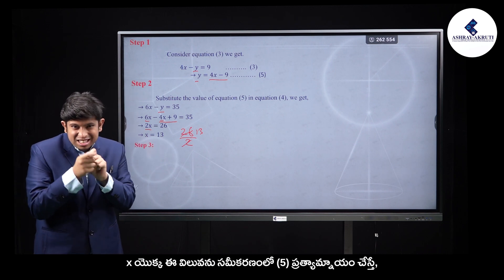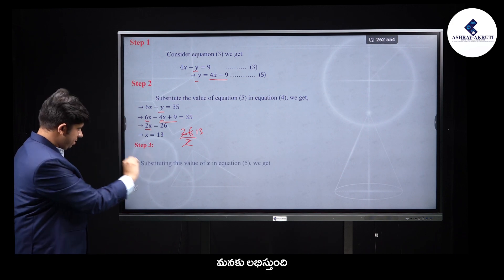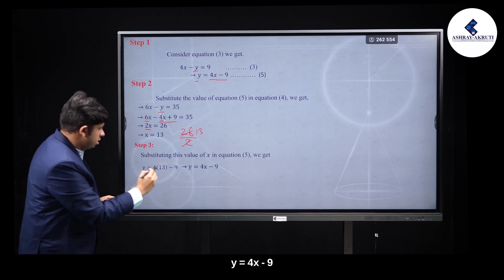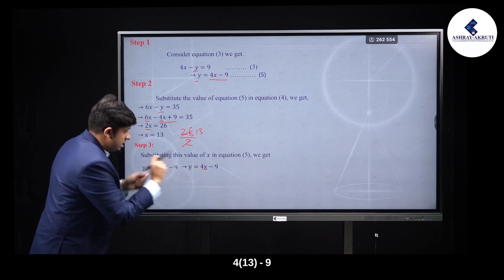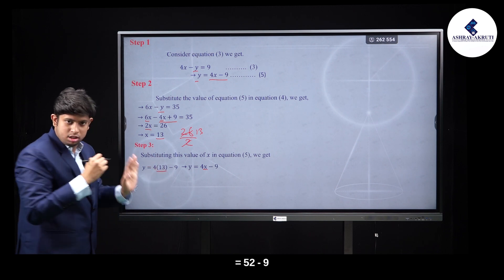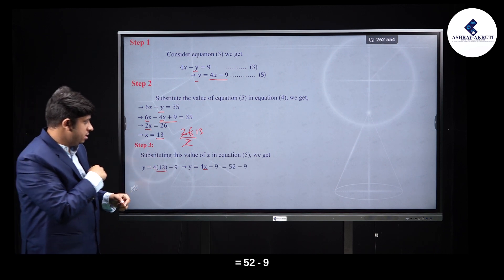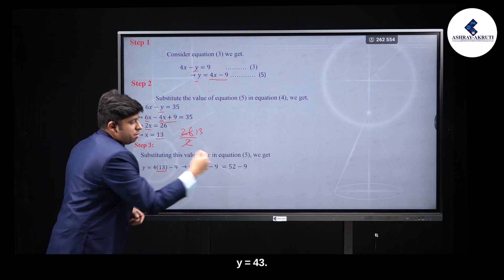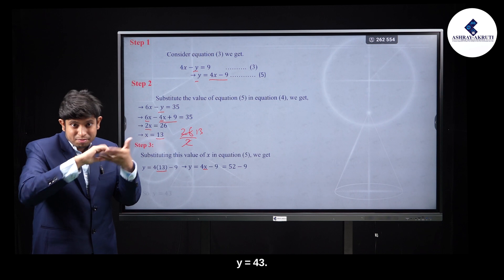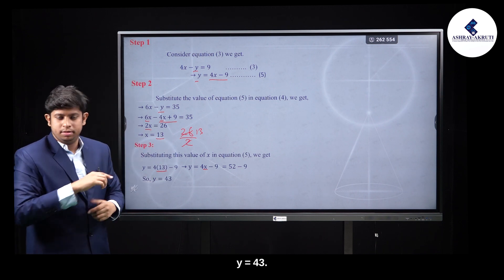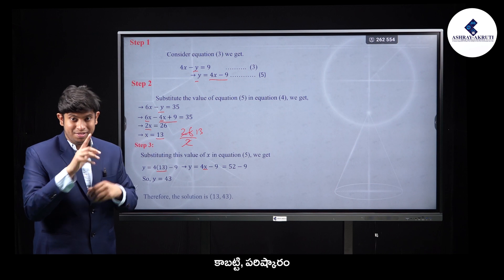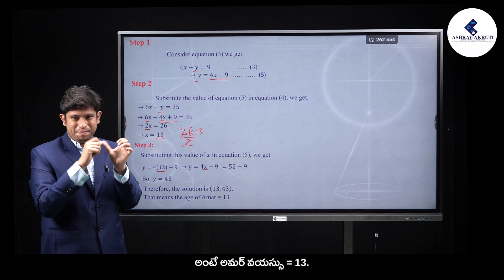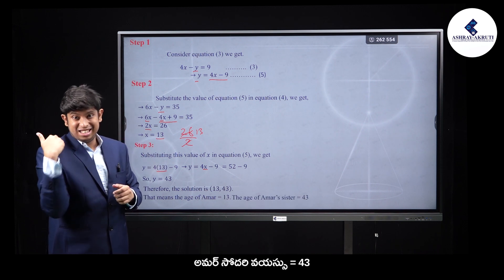Substituting x = 13 into y = 4x minus 9: y is equal to 4 into 13 minus 9, which is 52 minus 9. So y is equal to 43. Therefore the person's age is 13 and the sibling's age is 43.